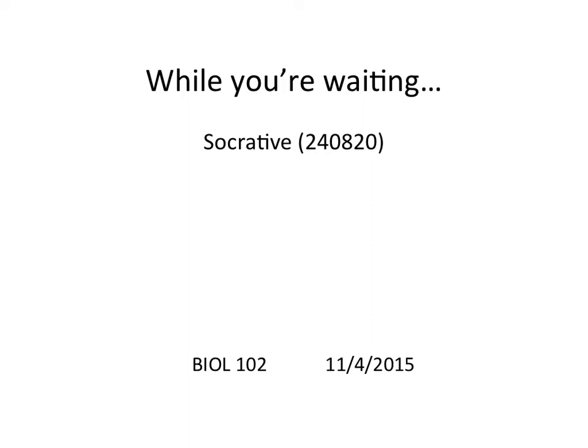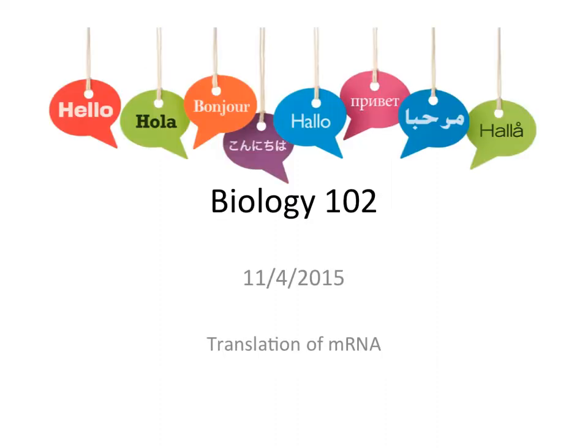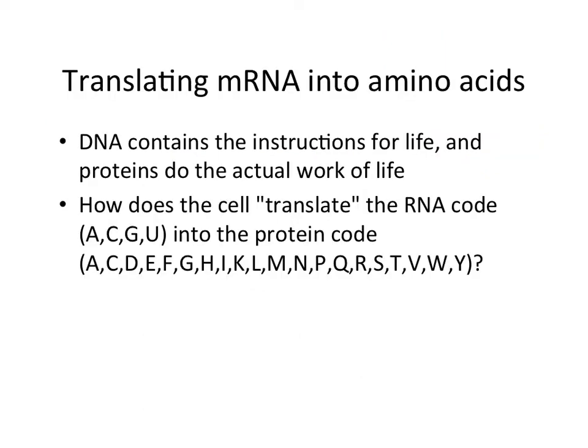So how do messenger RNA molecules, now that we've seen all of transcription and mRNA processing, how do those messenger RNAs get translated? Changing one language, the language of messenger RNA, into the language of amino acids. The first question is how do we turn four letters — an alphabet that uses A's, G's, C's, and U's — into the alphabet that uses 20 letters?